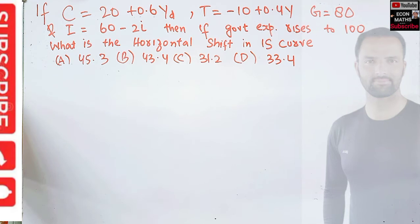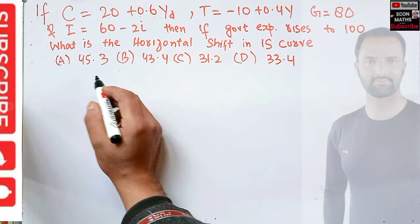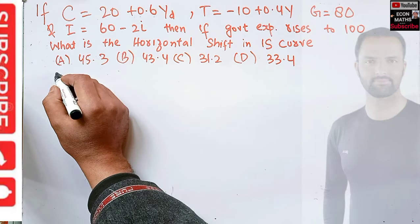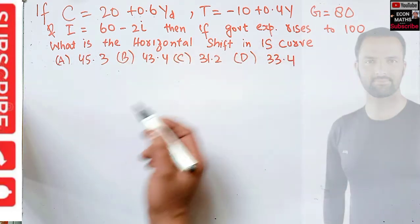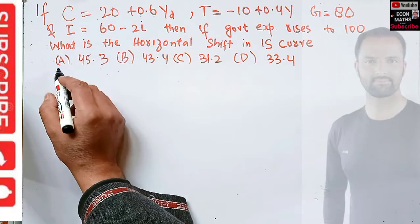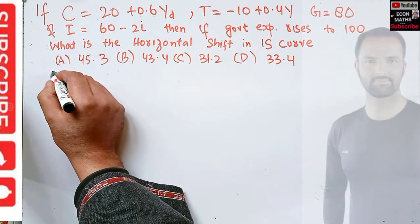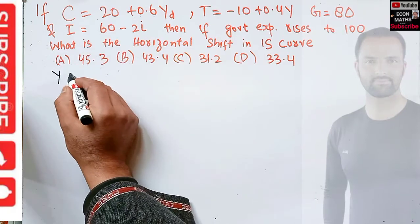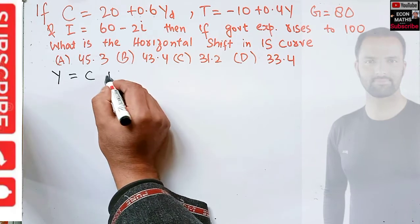First, we need to find out the IS curve. Since we are concerned with the IS curve, it is derived by the national income identity.